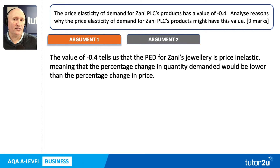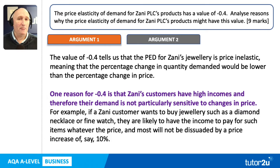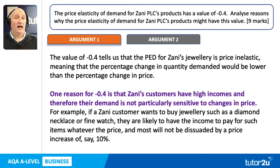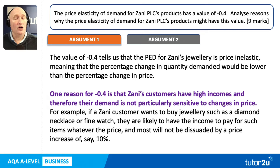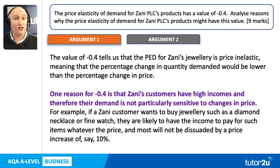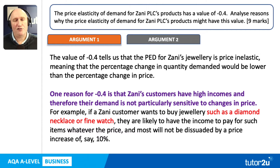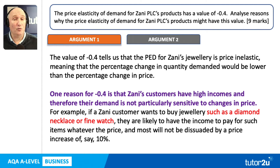Here's my first reason — a short PECAN paragraph. One reason for minus 0.4 is that Zani's customers have high incomes, and therefore their demand is not particularly sensitive to changes in price. For example, if a Zani customer wants to buy jewelry such as a diamond necklace or fine watch, they are likely to have the income to pay for such items whatever the price, and most will not be dissuaded by a price increase of, say, 10%. That reason is rooted in the context of Zani as a luxury jewelry retailer.